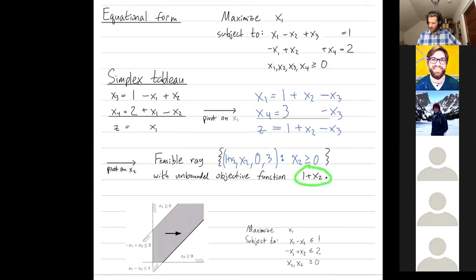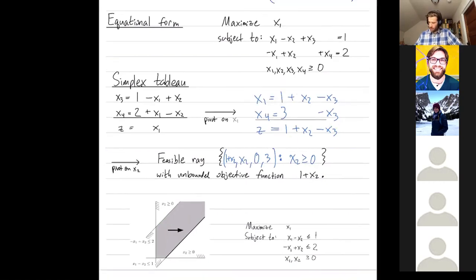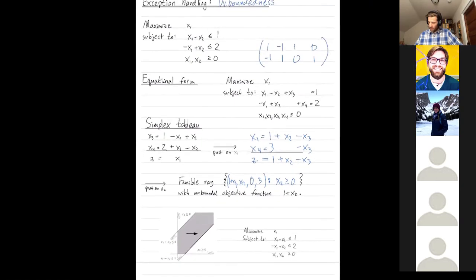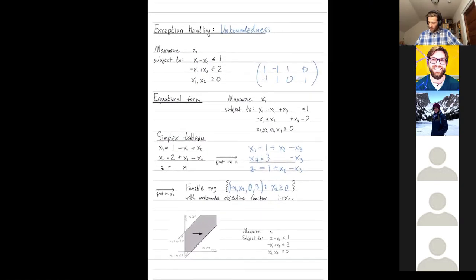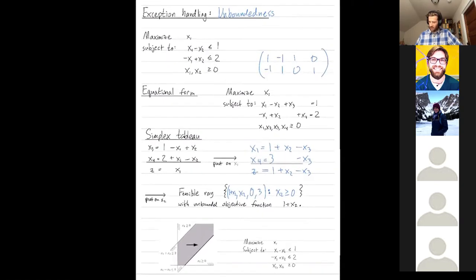Yeah, this objective function 1 plus x2 is obtained just by plugging in x2 and 0 in there. All right, so this is one exception that can come up in the simplex method, but you shouldn't be scared of it. You just start handling the simplex method without paying any attention, and it finds out for you if you can make your maximization function arbitrarily large. Any public questions?